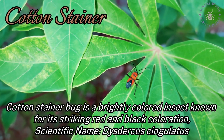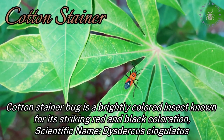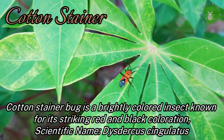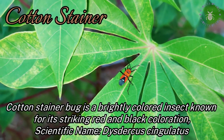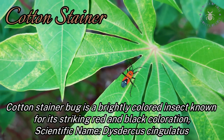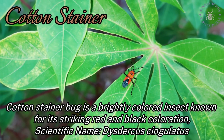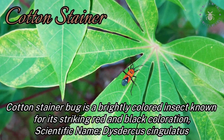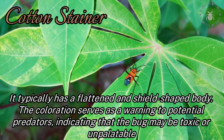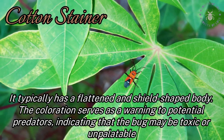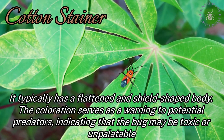The Cotton stainer bug is a brightly colored insect known for its striking red and black coloration. Its scientific name is Dysdercus cingulatus, and it typically has a flattened and shield-shaped body.